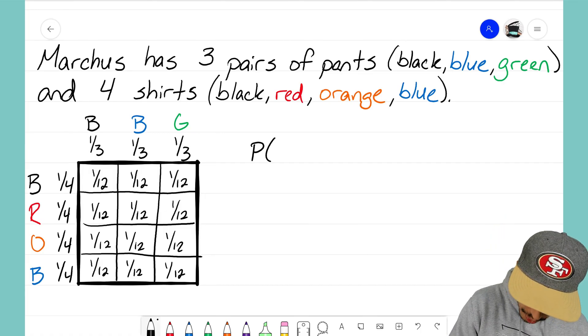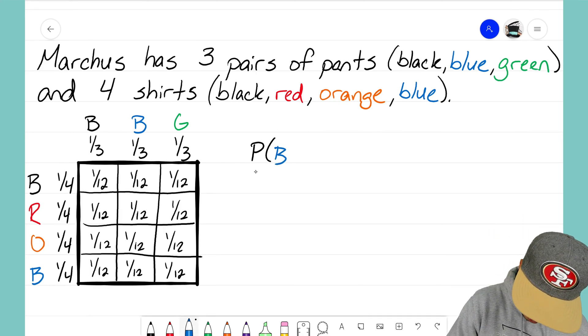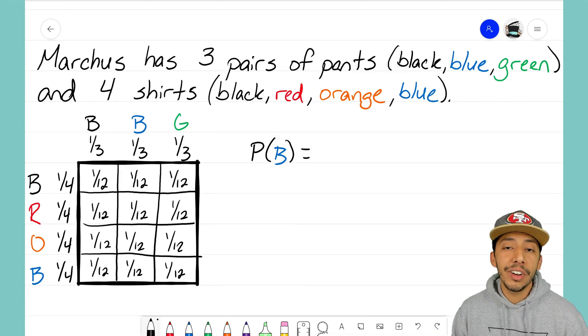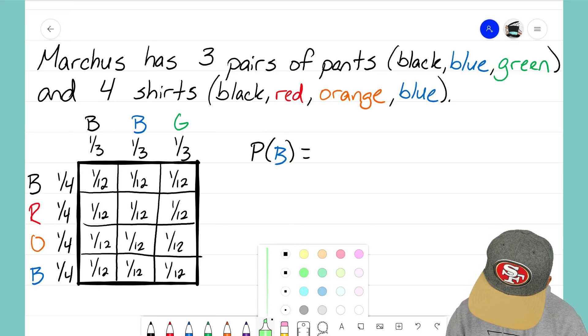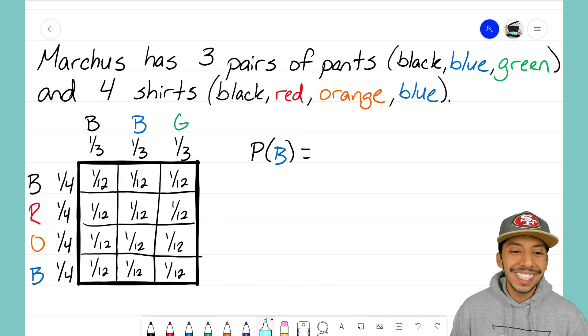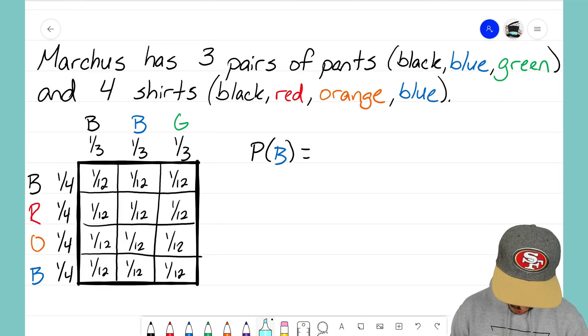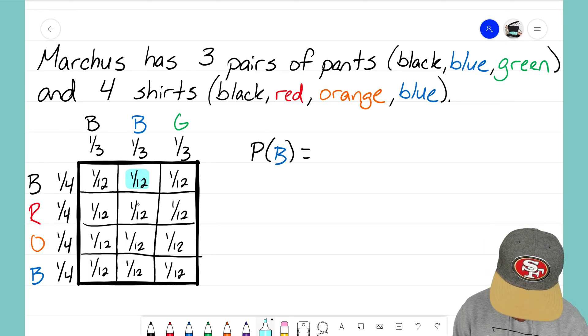Now let's say for this problem I wanted to know what's the probability that Marcus is going to wear the color blue. What I want to do now is, now that I have that area model all mapped out, I just want to locate the boxes there that represent him wearing blue. So I'm going to get my highlighter, and actually I'll use the blue highlighter for this. I want to highlight every single box where he might be wearing blue.